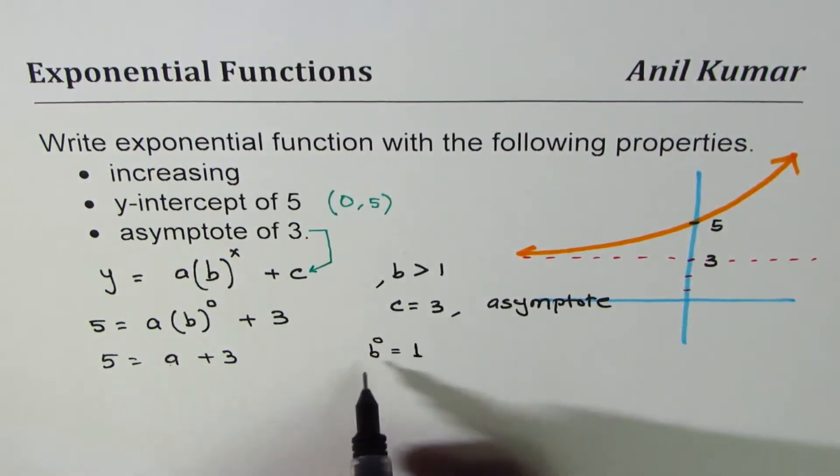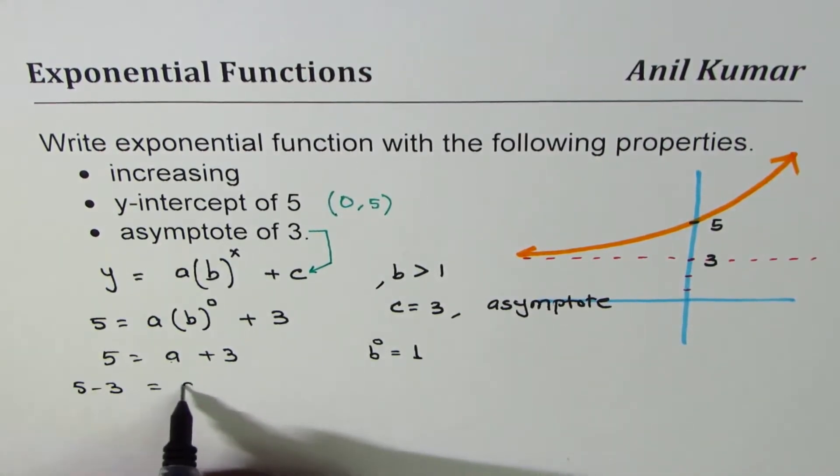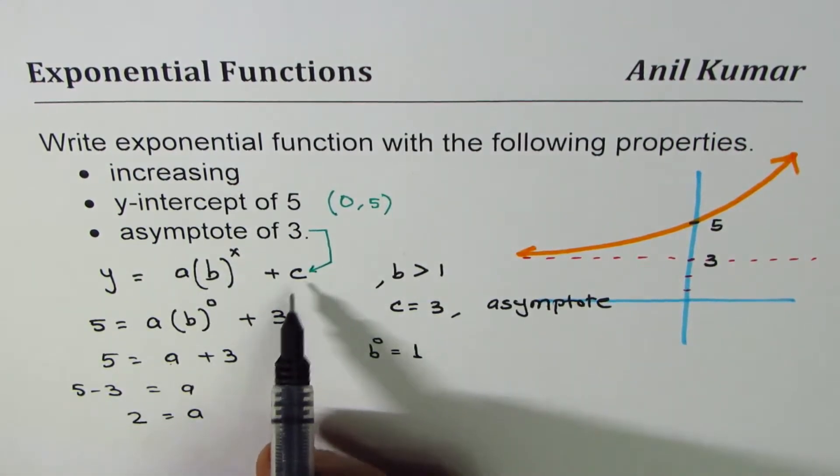Since b to the power of 0 is 1, anything to the power of 0 is 1. So 5 minus 3 is a. The value of a is 2. So we know a is 2, c is...